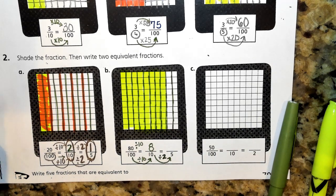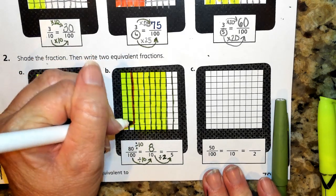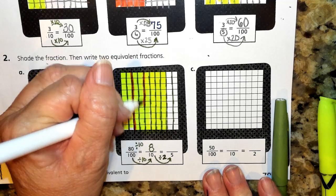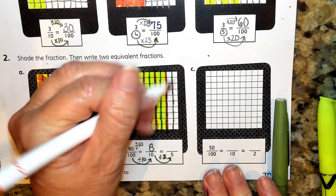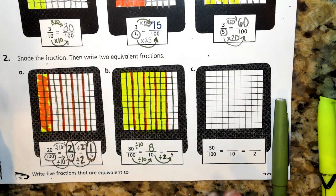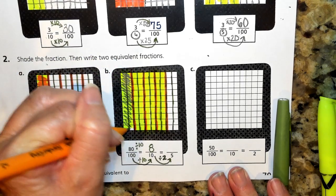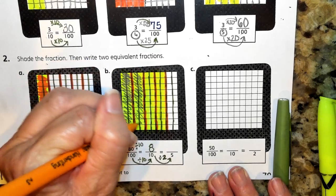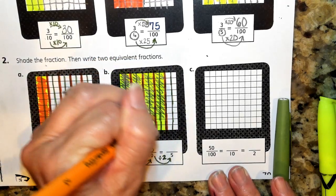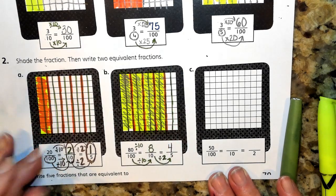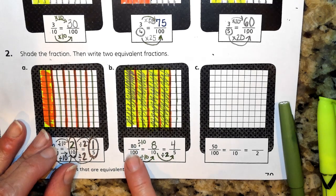So I'm going to take my orange and I'm going to cut this into fifths. So we have 1 fifth, 2 fifths, 3 fifths, 4 fifths, and 5 fifths. And if I think about how many are shaded here, this is 1 fifth, 2 fifths, 3 fifths, and 4 fifths. So 4 fifths is equivalent to 8 tenths, which is equivalent to 80 hundredths.